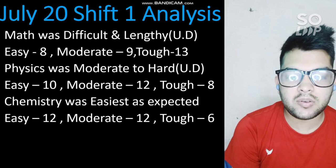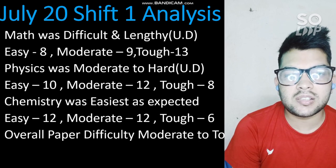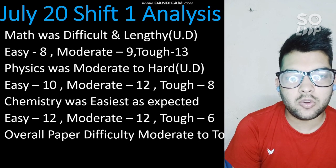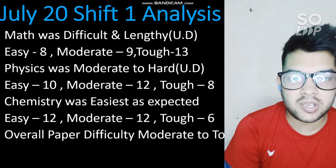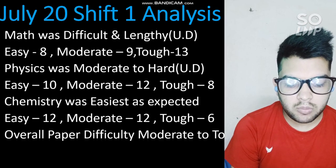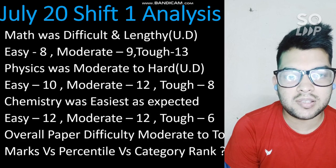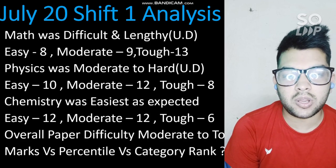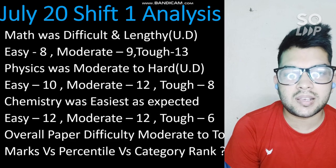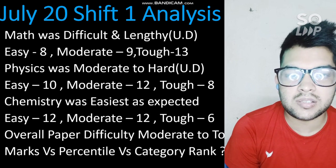Overall, the paper difficulty was moderate to tough, comparable to the March 16 Shift 1, which was also a moderate paper. You can expect similarity in marks versus percentile, but you have to score more marks since students had more preparation time between the March and July attempts. For percentile versus category rank — including General, OBC, EWS ranks — you can check my other video linked in the description box.